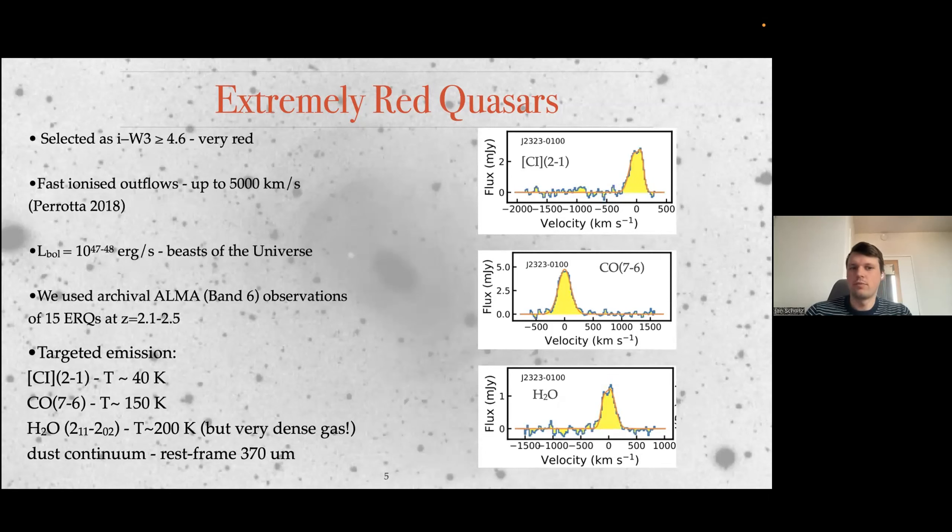The Band 6 at redshift 2.1 to 2.5 will cover the following emission lines. It's CO 2 to 1, which is tracing your cold gas at around 40 Kelvin. CO 7 to 6, which is tracing your temperature of around 150 Kelvin cold gas. So from my perspective, as an optical IFU person, these are still extremely cold. Then you have your water transition, which is tracing roughly 200 Kelvin gas, but extremely dense. You actually need a very high density to have water emission.